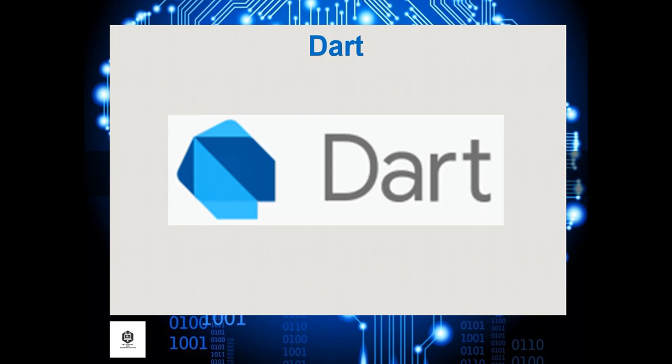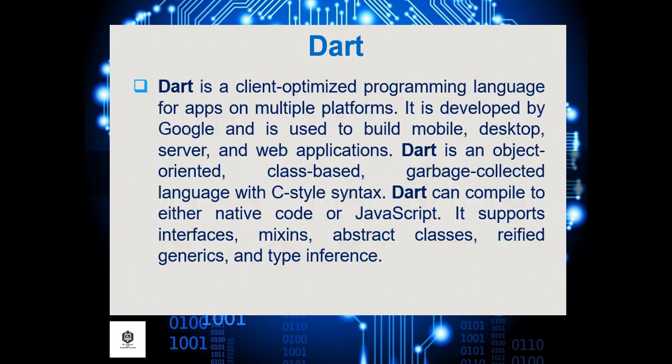Dart is a client-optimized programming language for apps on multiple platforms. It is developed by Google and is used to build mobile, desktop, server, and web applications. Dart is an object-oriented, class-based, garbage-collected language with C-style syntax. Dart can compile to either native code or JavaScript. It supports interfaces, mix-ins, abstract classes, reified generics, and type inference.